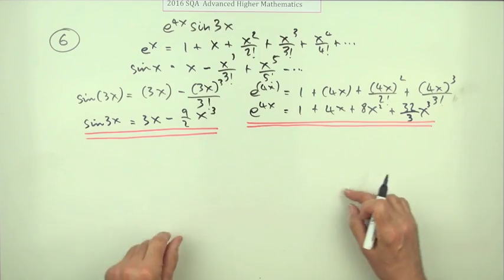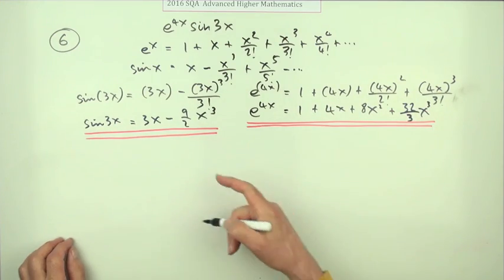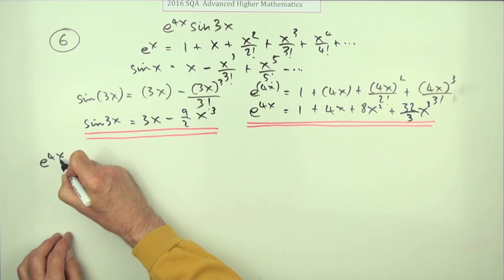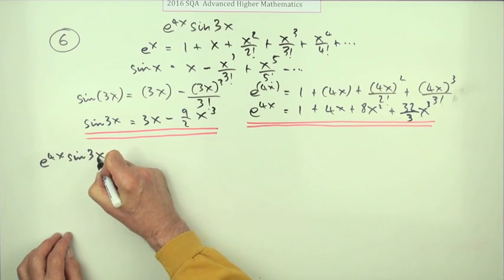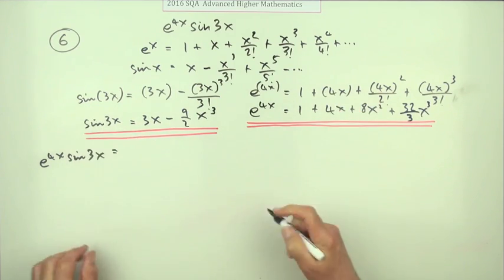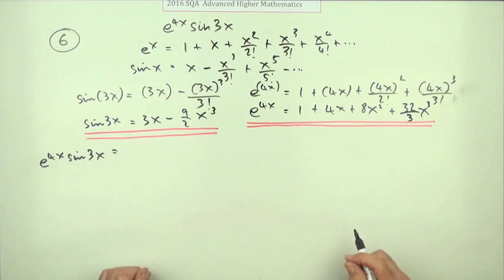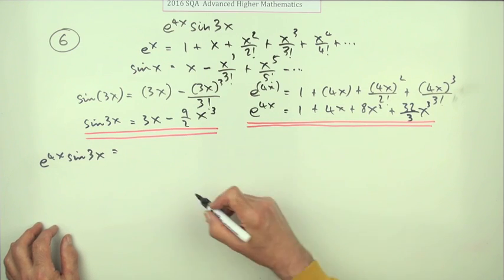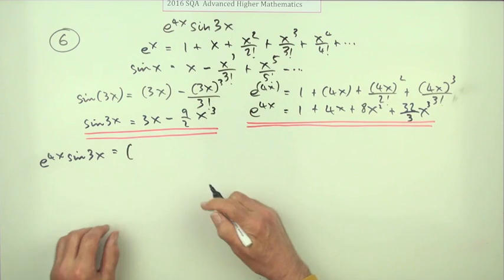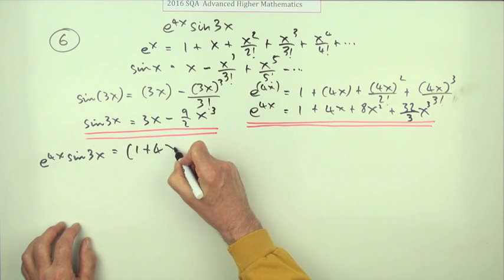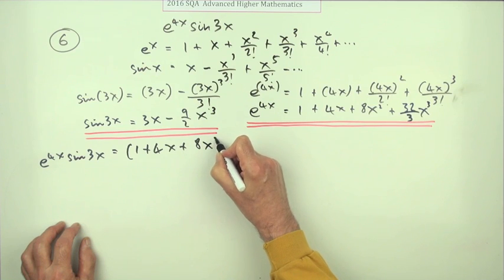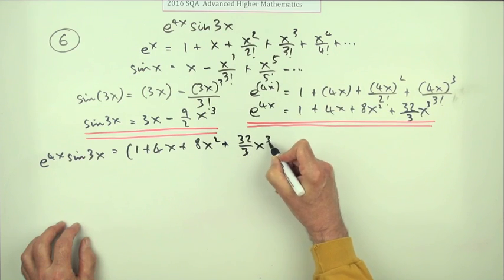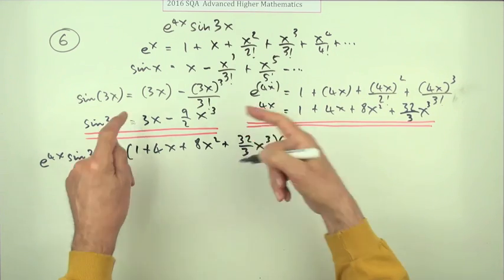I'm getting a little crushed up near the lines above, but I want to expand e to the 4x times sine 3x now. So we need: 1 plus 4x plus 8x squared plus 32/3 x cubed, all times the sine 3x expansion.